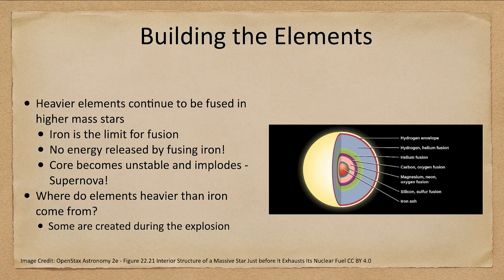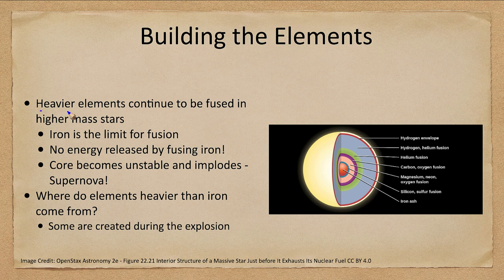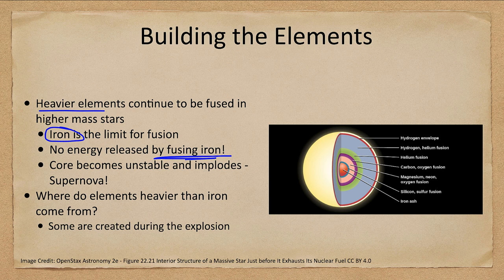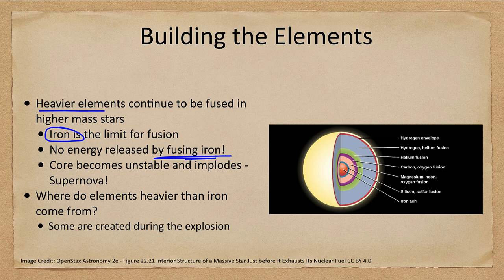So let's look at building these elements. Heavier elements continue to be fused. Iron is the limit. There is no energy released from fusing iron. In fact it takes energy to fuse iron meaning that the amount of energy is lost and the core starts to cool off. So when you get the core hot enough it starts to fuse iron, it loses energy that sucks energy out of the core and the core implodes collapsing downward and then rebounding outward and exploding as a supernova.